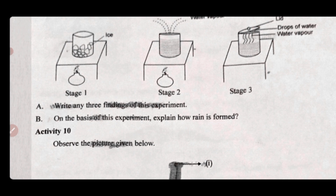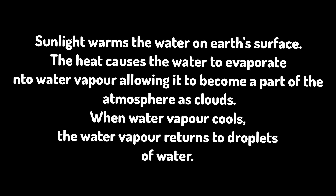On the basis of the experiment, explain how rain is formed. Sunlight warms the water on earth's surface. The heat causes the water to evaporate and change into water vapor, allowing it to become part of the atmospheric clouds. When water vapor cools, it returns as droplets of water — that is the answer.